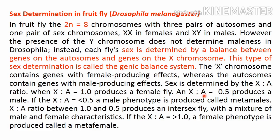When the ratio is less than 0.5, a male phenotype called a metamale is produced. When the ratio is between 0.5 and 1, an intersex fly with a mixture of male and female characteristics is produced. When the ratio is greater than 1, a female phenotype called a metafemale is produced.